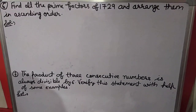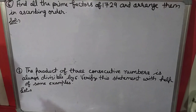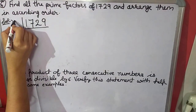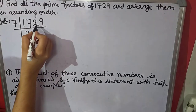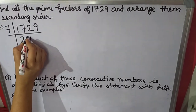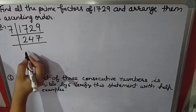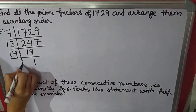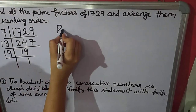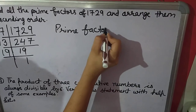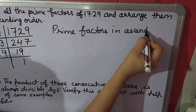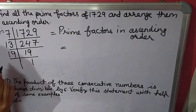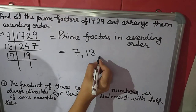Sixth question: find all the prime factors of 1729 and arrange them in ascending order. 1729 goes in the table of 7, then 247 goes in the table of 13, then 19, which is a prime number. The prime factors in ascending order are 7, 13, and 19.